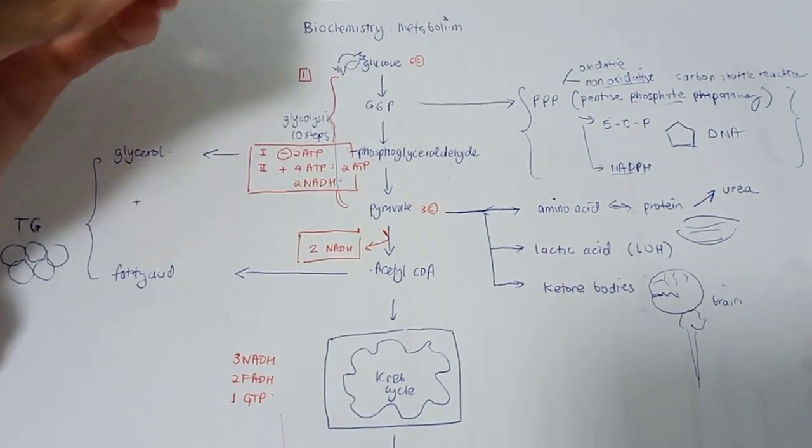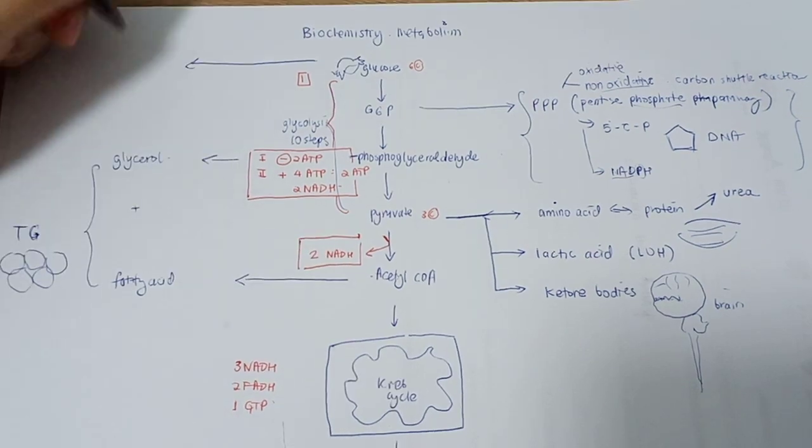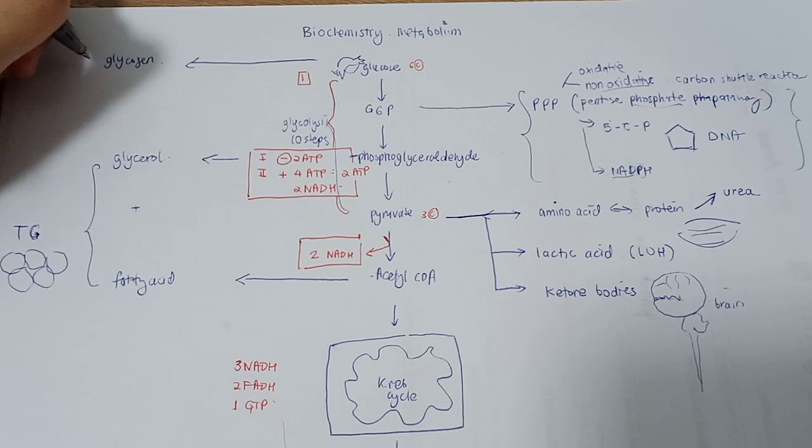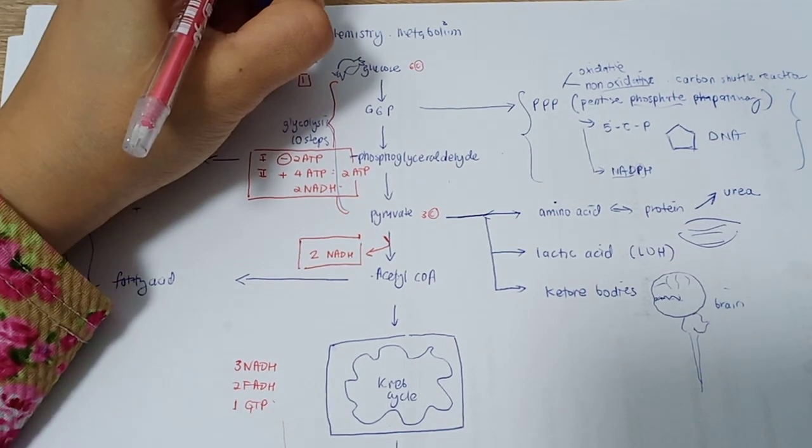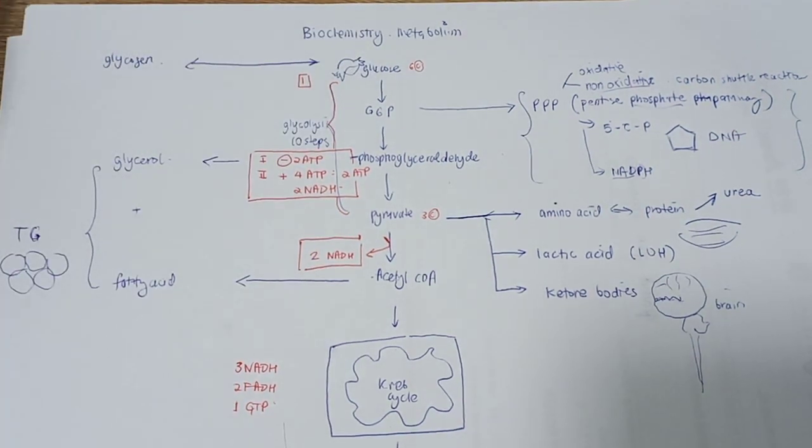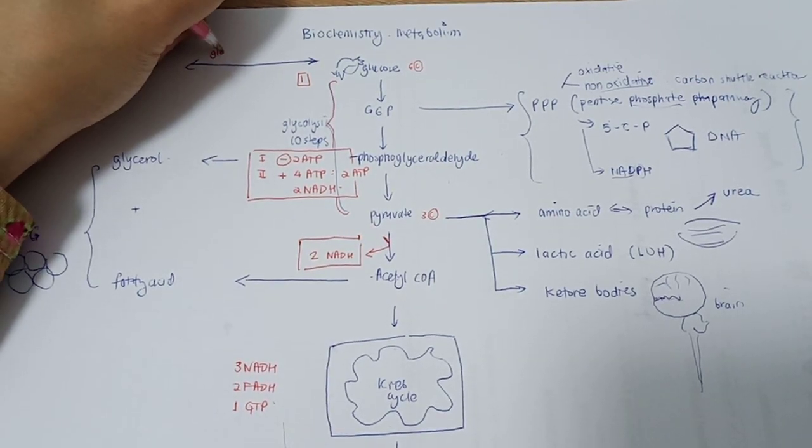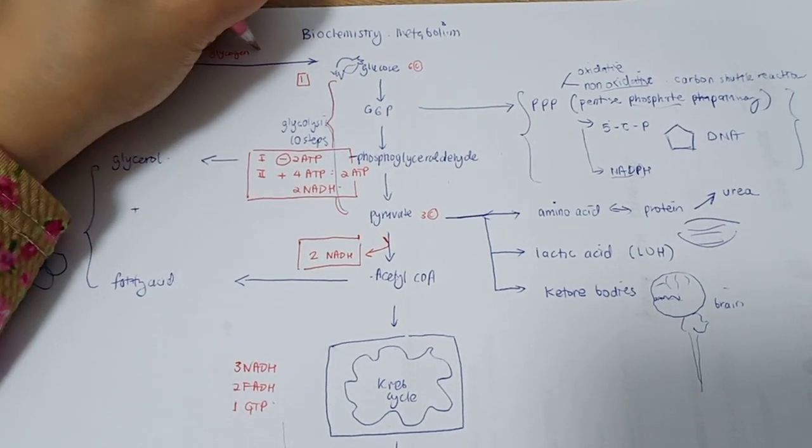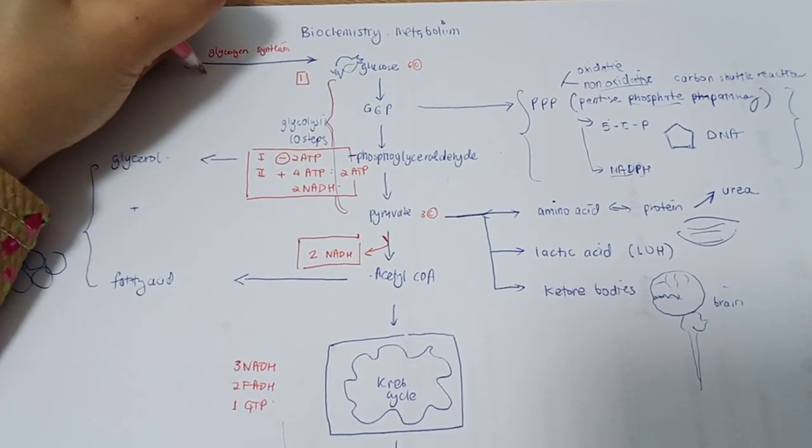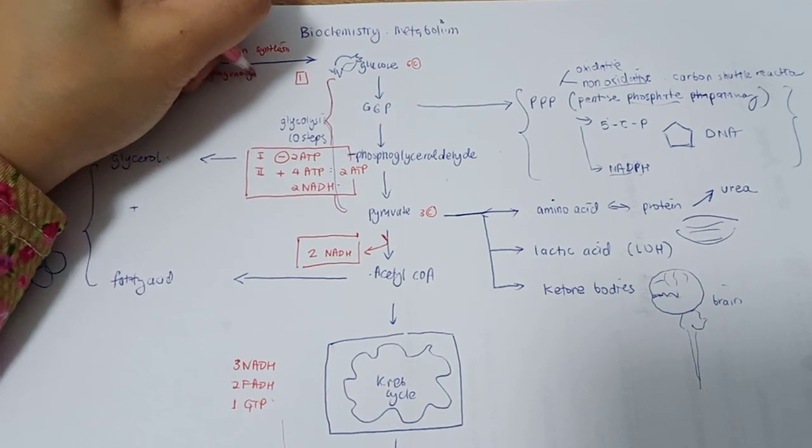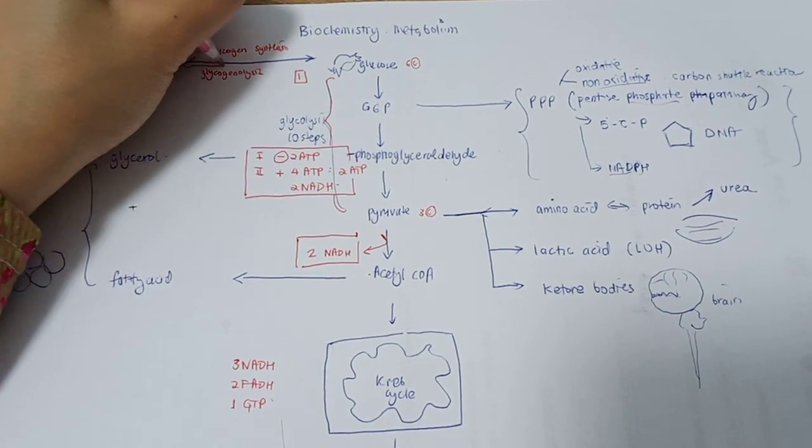Secondly, the glucose can also be stored as a form of glycogen in the liver, and it can also transfer back to glucose. This is what we call glycogen synthesis or glycogenolysis. Glycogenolysis if it goes this way.